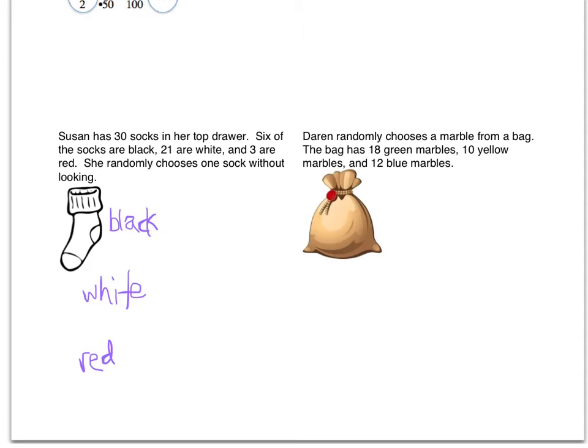And then black socks. Six of the socks are black. So six out of 30 are black. 21 are white out of 30 and 3 out of 30 are red. Then what we need to do is we need to convert this and we basically have our fractions here. It's not asking for them in simplest form so we don't have to do that but it may actually help to solve this problem.